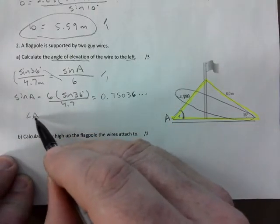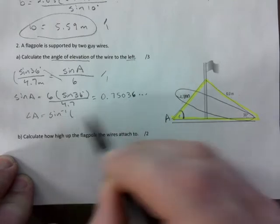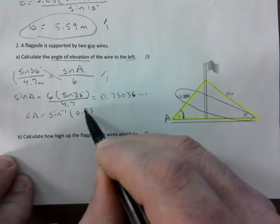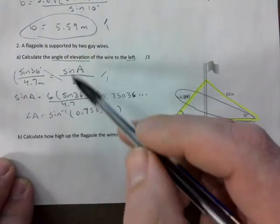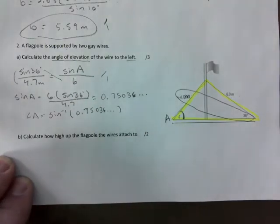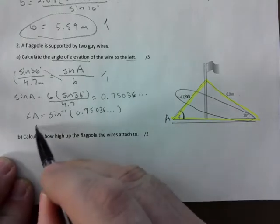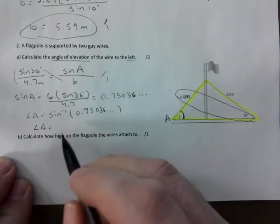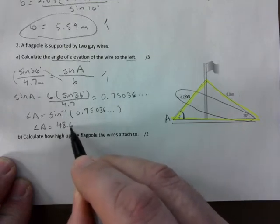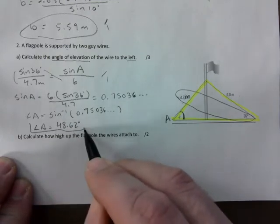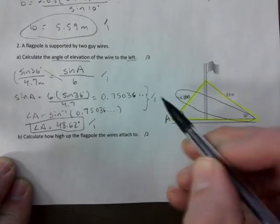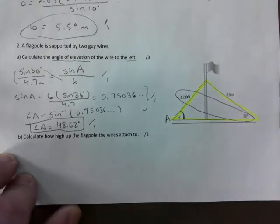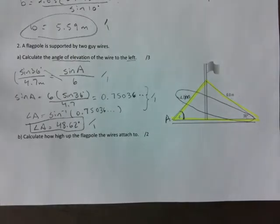Cross multiply and divide. 6 times sine of 36 over 4.7. Then you type this in and you should have something that starts with 0.75036 and that keeps going. So angle A is sine inverse of that. Best thing you can do is probably to just have an example, maybe even this example on your study sheet. That way you know the steps you need to take. And then this gives you 48.62 degrees. You get one mark for the final answer and one mark for the work in between, emphasizing the inverse that you took there to get to the final. So three marks.